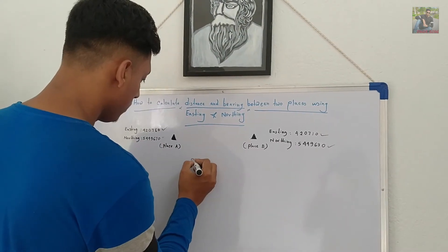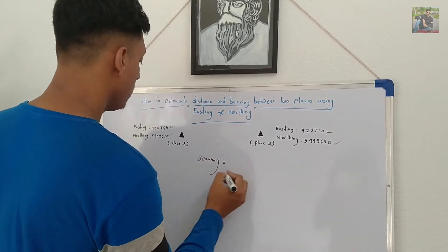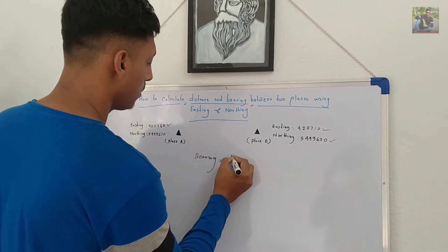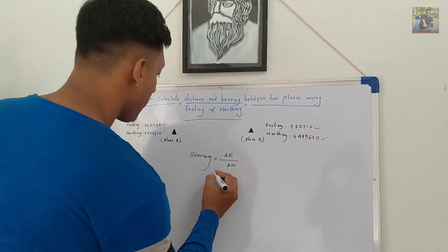Now, it is time to measure the remaining part, which is bearing. To compute the bearing between place A and place B, you have to follow this formula: that is E divided by N.